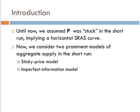Essentially, what we've done so far is assume that P was stuck in the short-run. That is, we had a completely horizontal short-run aggregate supply curve. Well, that may not be the most realistic expectation.